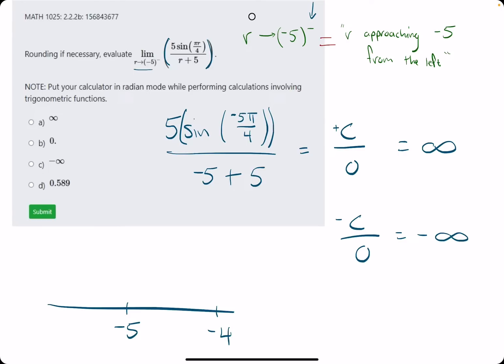From left to right, we have negative 6, negative 5, negative 4. Approaching negative 5 from the left means going this direction from negative 6. A value approaching negative 5 from the left, something very close to negative 5, would be something like negative 5.01 - to the left of negative 5.